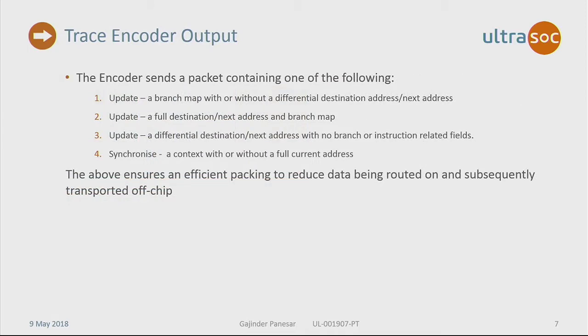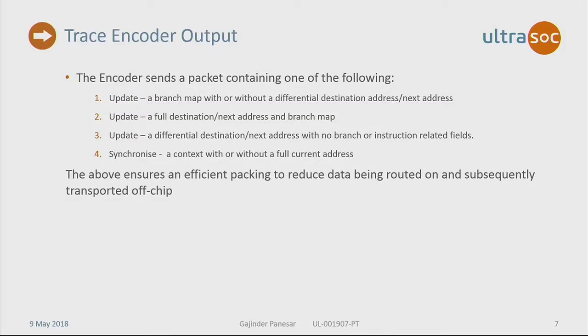For multiple issue cores, we provide the same interface but replicated the number of n-ways that you have in your processor core. The encoder will send a set of four messages depending on different scenarios: an update with a branch map with differential addresses — so you don't always have to send the full address, you can send the difference between the current address and the previous address sent — a fuller destination address with a branch map, and occasionally synchronization packets.